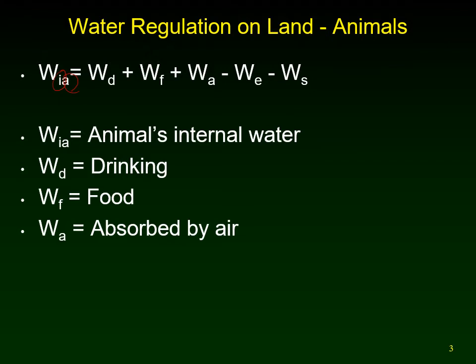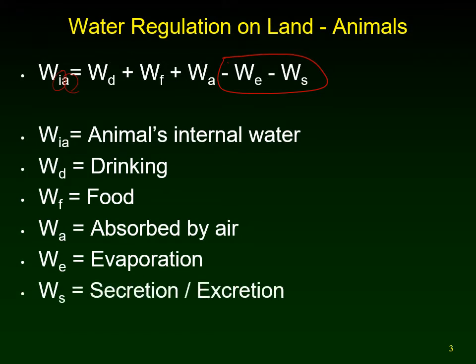And you lose water — now we're on the negatives. We're going to lose water through evaporation and secretion or excretion: sweating, crying, oozing, urinating — there are a number of ways we dump water out of our body. That could be through reproductive structures, different mucus, feces — lots of different ways we are excreting water.